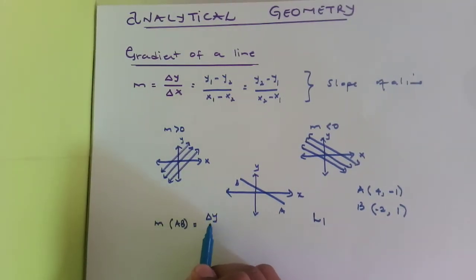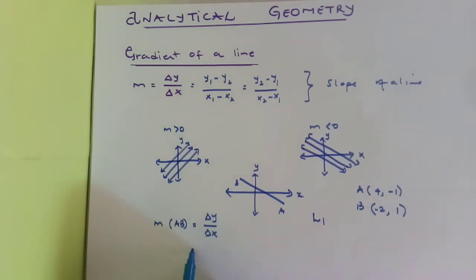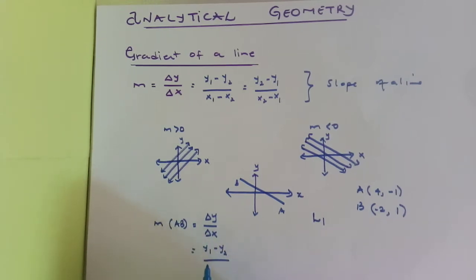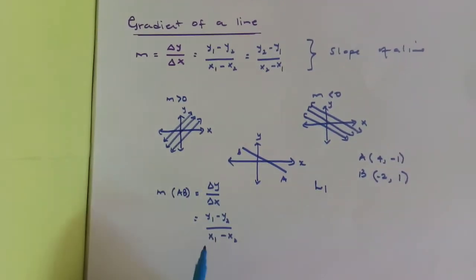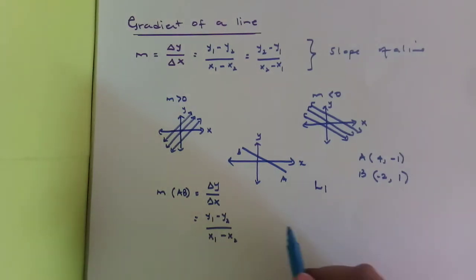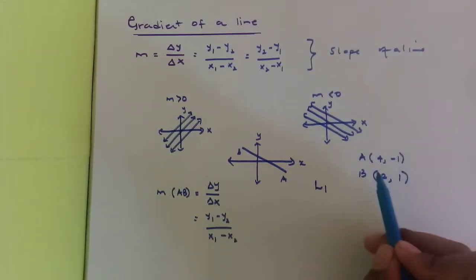So we use y1 minus y2 divided by x1 minus x2. An important note: if this is y1, this has to be x1; if this is y2, this has to be x2. You cannot mix them up — writing y1 minus y2 in the numerator but x2 minus x1 in the denominator will not give you the right answer. Be careful of that.